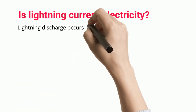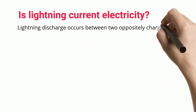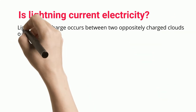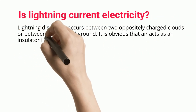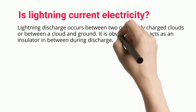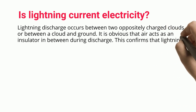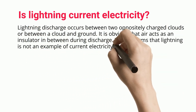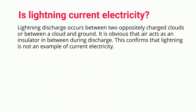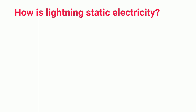Lightning discharge occurs between two oppositely charged clouds or between a cloud and ground. It is obvious that air acts as an insulator in between during discharge. This confirms that lightning is not an example of current electricity. How is lightning static electricity?